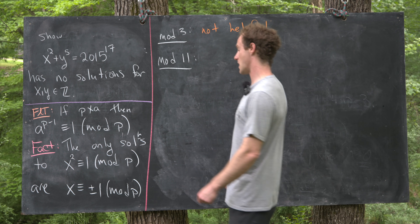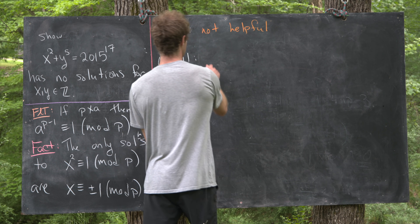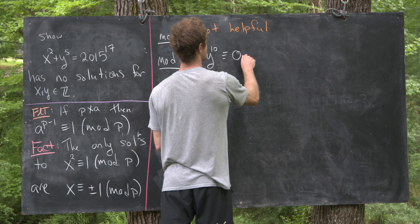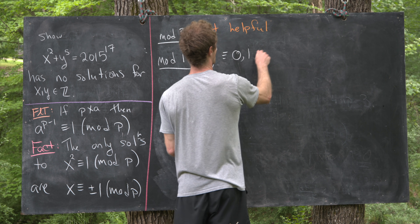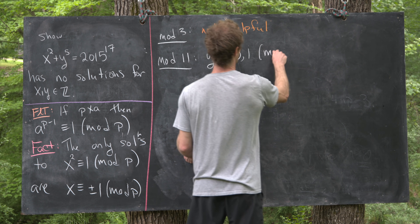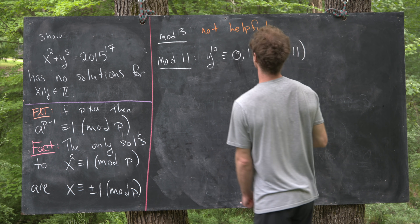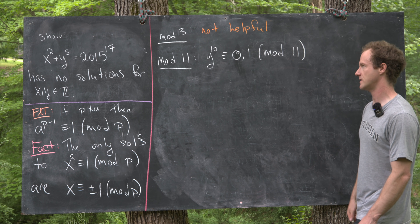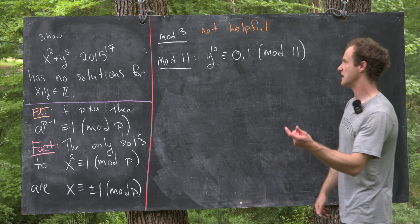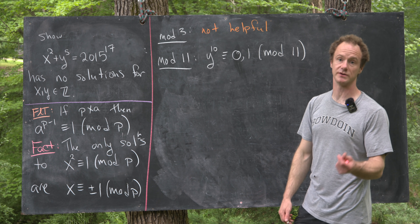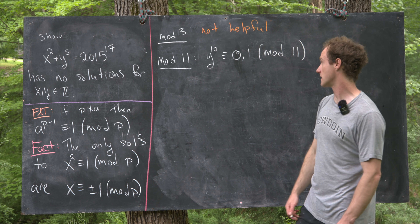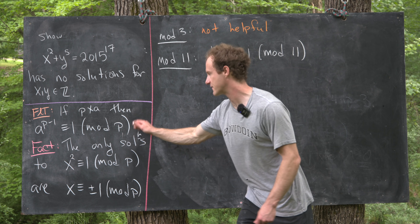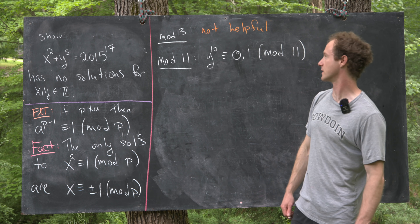If we work mod 11, that means y to the 10 is going to be congruent to 0 or 1 modulo 11. It's going to be 0 mod 11 if y is congruent to 0 mod 11, and it'll be 1 mod 11 otherwise, by Fermat's Little Theorem.